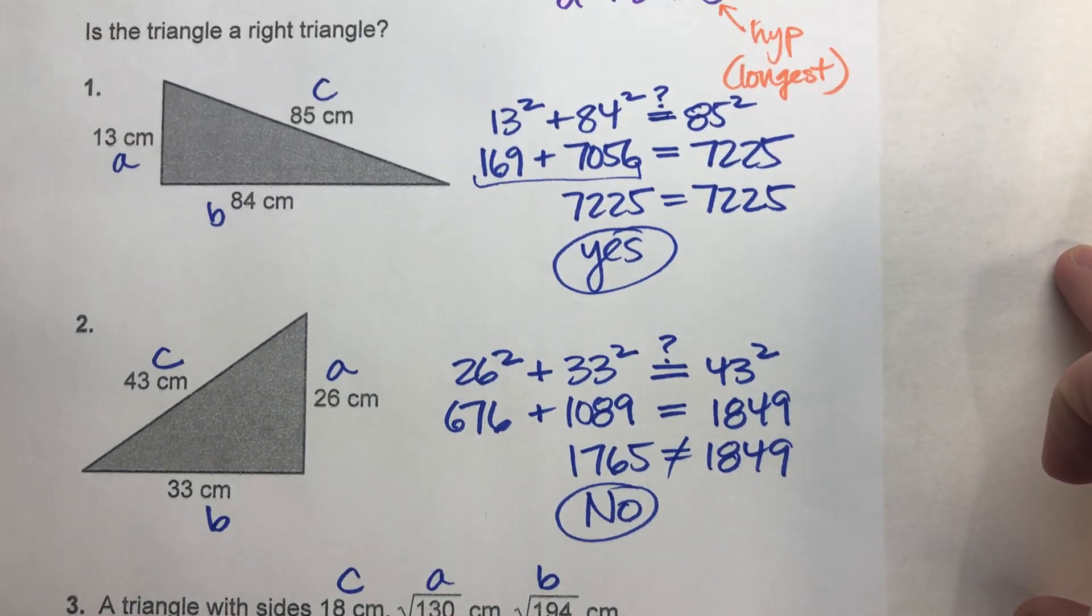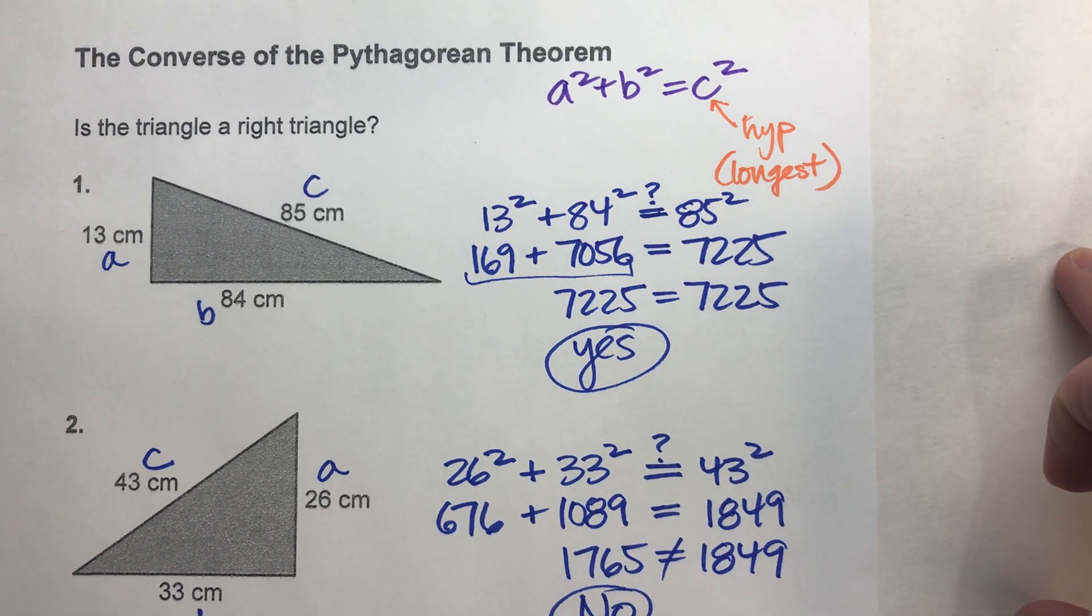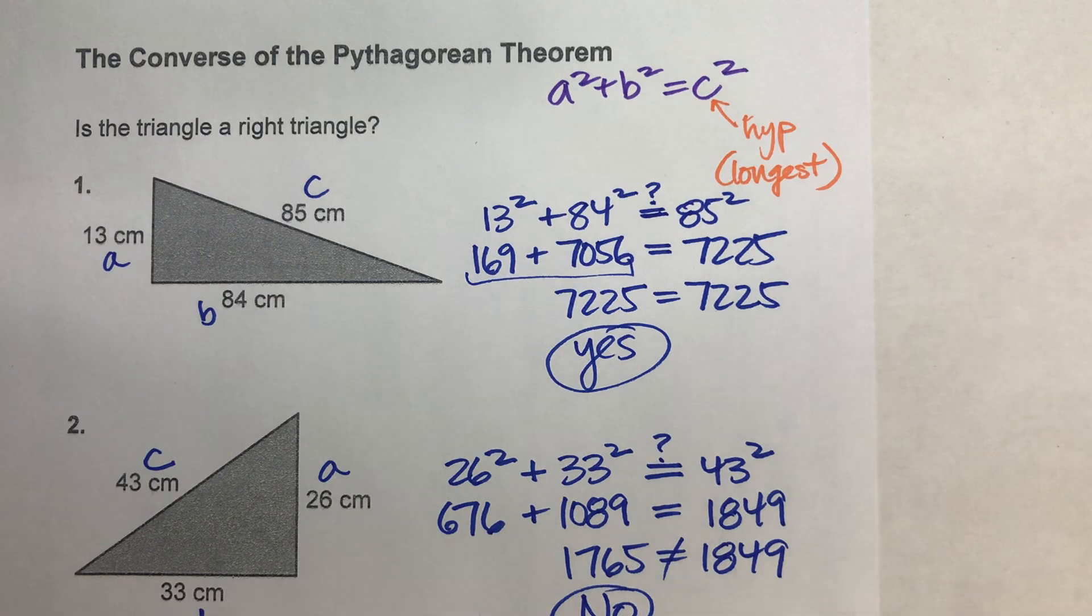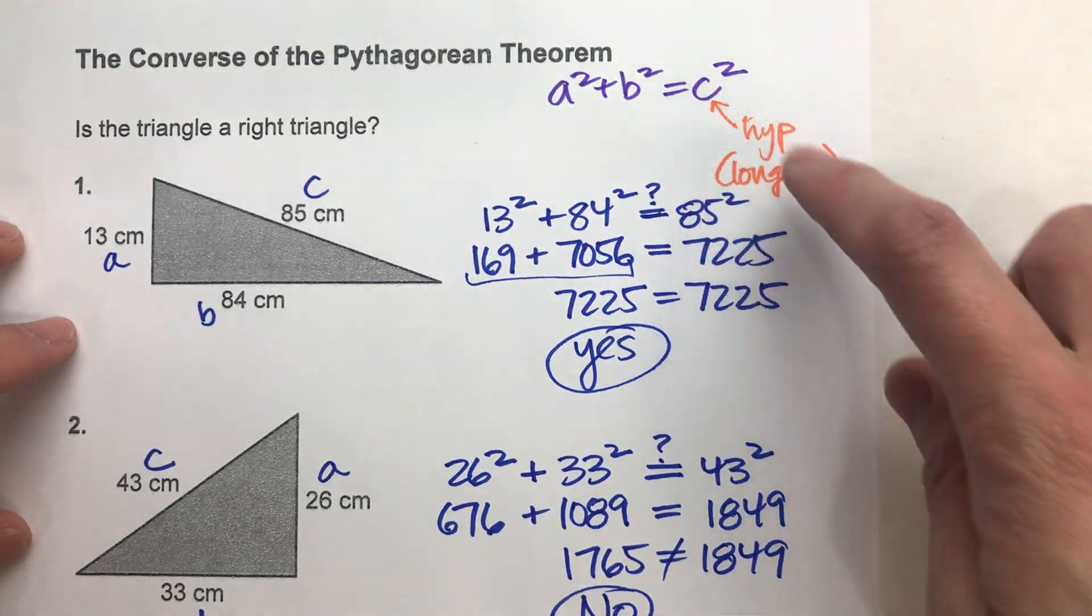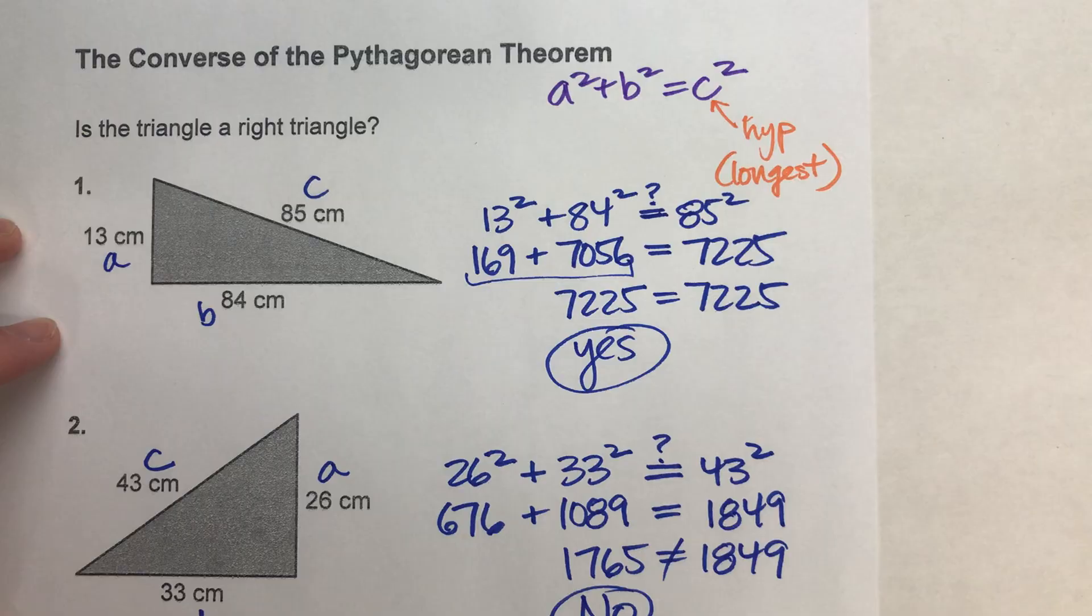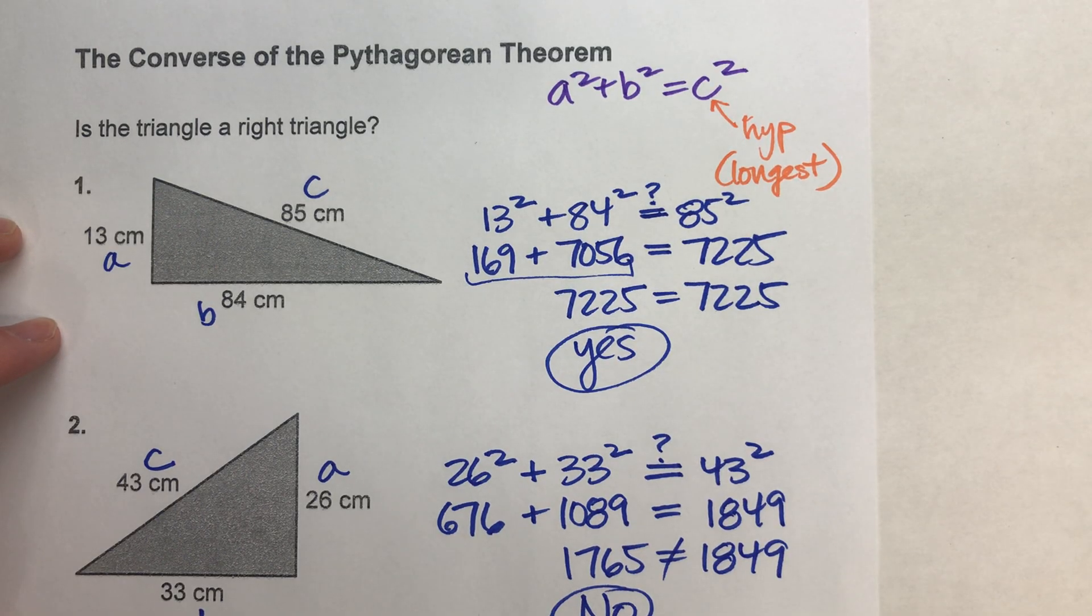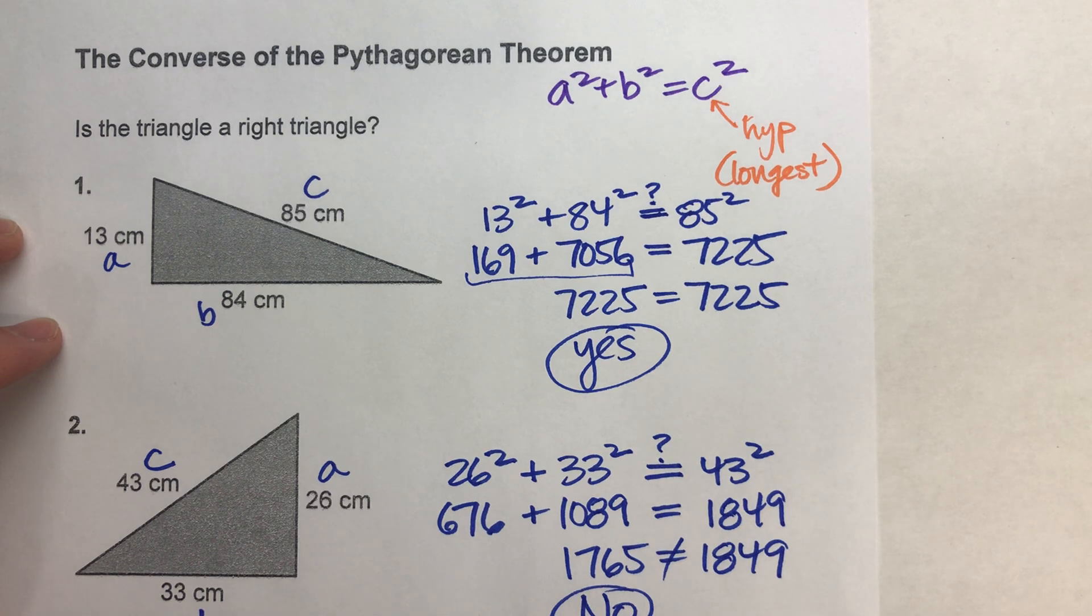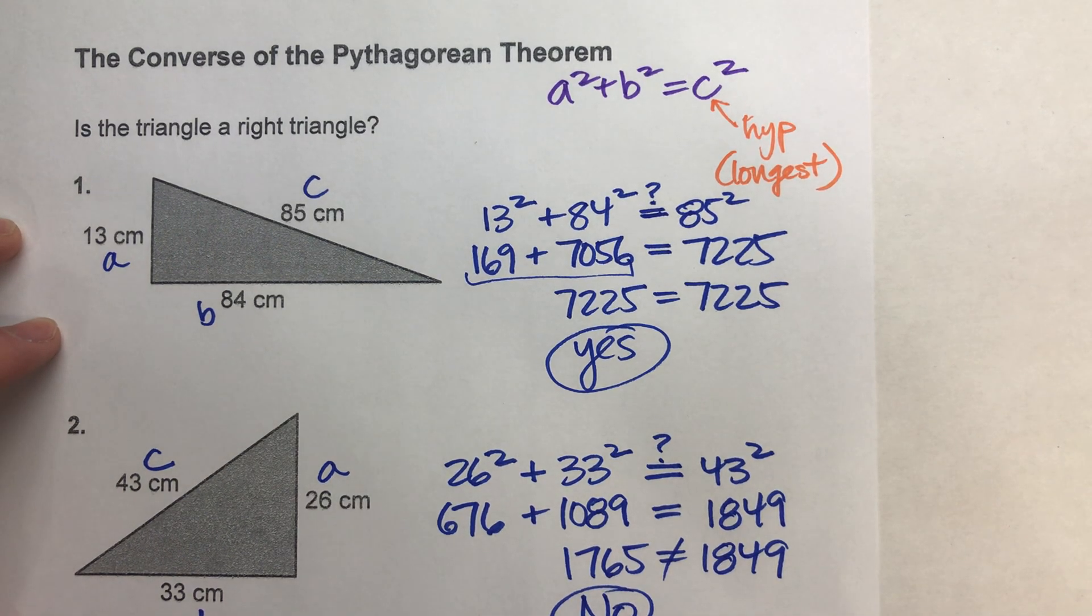So, that's how the converse of the Pythagorean theorem works. What we're doing is we're testing to see if A squared plus B squared equals C squared. And if it does, then it's a right triangle. If it doesn't, then it's not. Hopefully you found this video helpful. If you did, please hit that like button. Also subscribe, because it really helps us out. But with that being said, good luck on your math. And I will see you next time.